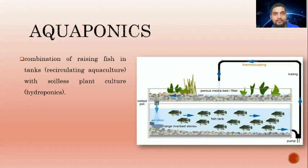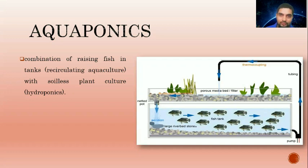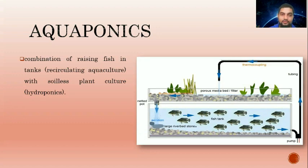One of the non-conventional methods is called aquaponics. This is not widely practiced, especially in Guyana, though some research is being done. It is a combination of raising fish and growing plants. As shown in the image, the fish are in a tank at the bottom and the plants are at the top. The fish give off their waste into the water, which increases the nutrients in the water, and the plants then use those nutrients. In this way, the plants are dependent upon the organic matter produced by the fish.